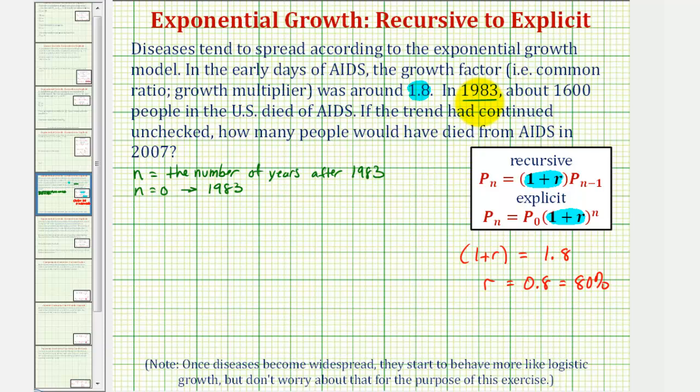And since in 1983, 1,600 people in the U.S. died of AIDS, that means p sub 0, the initial amount or initial population, is 1,600.